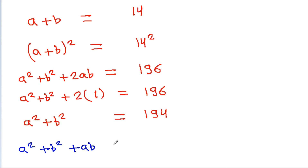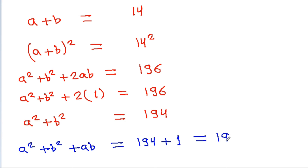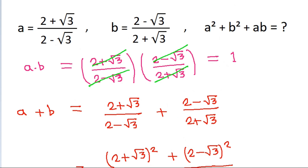And we have to find the value of a squared plus b squared plus ab. So a squared plus b squared is 194 and ab is 1, so it will be equal to 195.